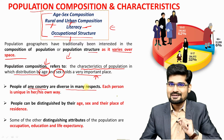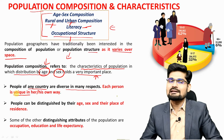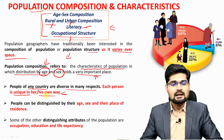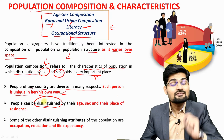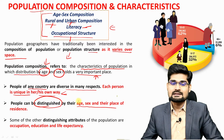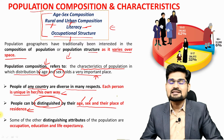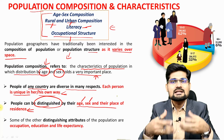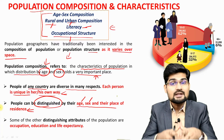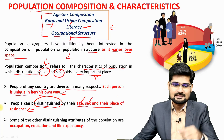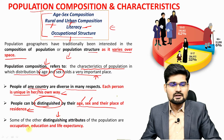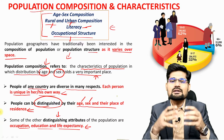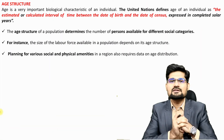People of any country are diverse in many respects. Each person is a unique entity, and people can be distinguished and identified by aspects of their identity such as age, sex and place of residence. The Survey of India collects all these vital statistics. Other distinguishing attributes include occupation, education and life expectancy.